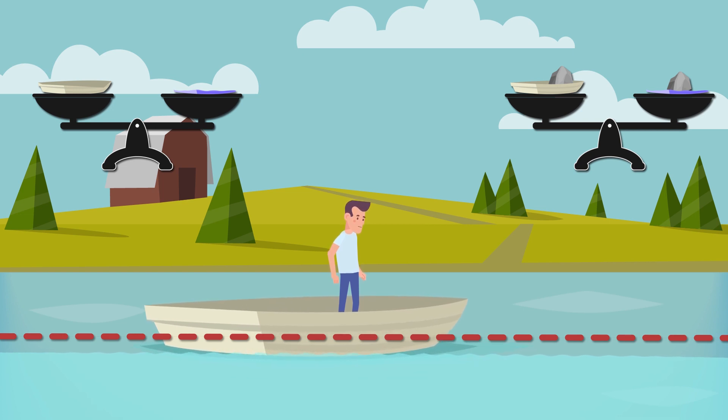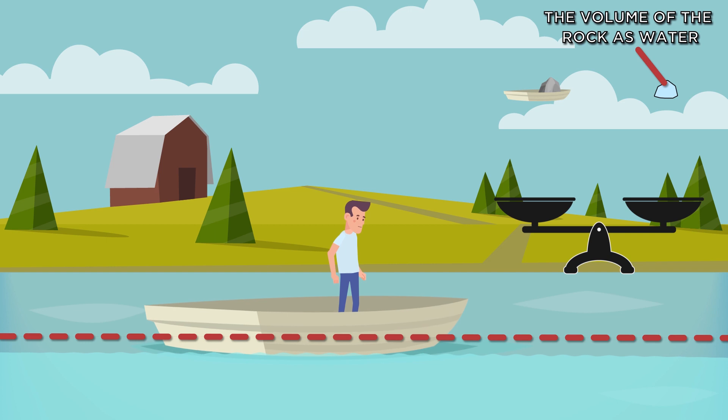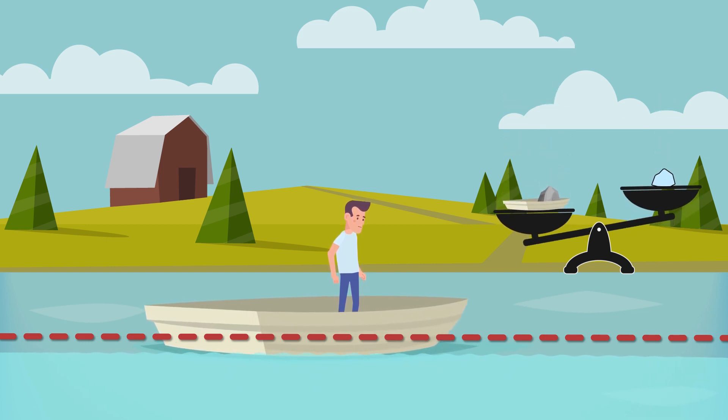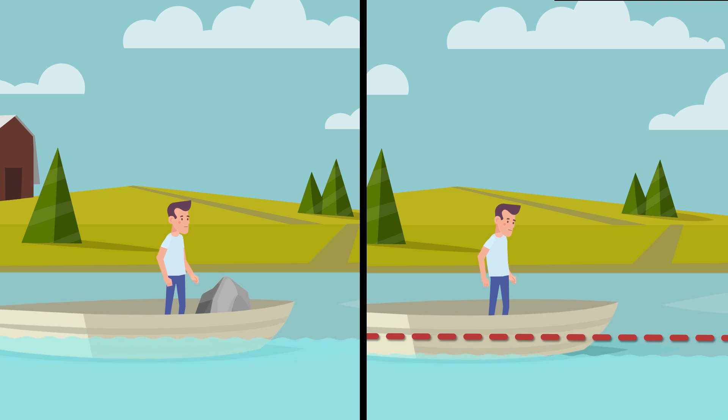While in the boat, the rock was displacing its own weight. However in the water, it was displacing its own volume. If the rock is denser than water, the amount of water it displaces when it floats is higher than the amount of water in place of its volume when it sinks. So it displaces less water when it's actually in the water. And the level goes down.